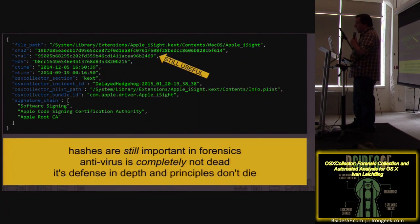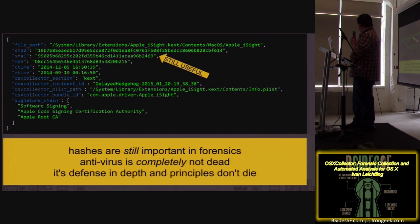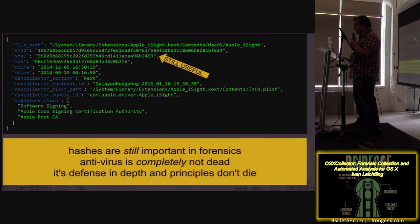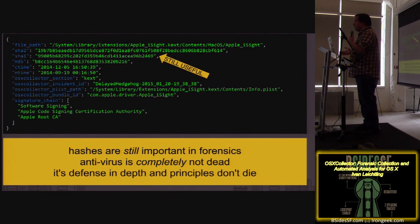We grab hashes — hashes are still useful. Lots of people say you can't find problems with hashes, but if you have hashes for stuff you found before, you can use those hashes to find more things. If you have 5,000 Macs and one gets infected with something you've never seen before, maybe some of the others are going to have the same hash. So we collect those — I think it's defense in depth.